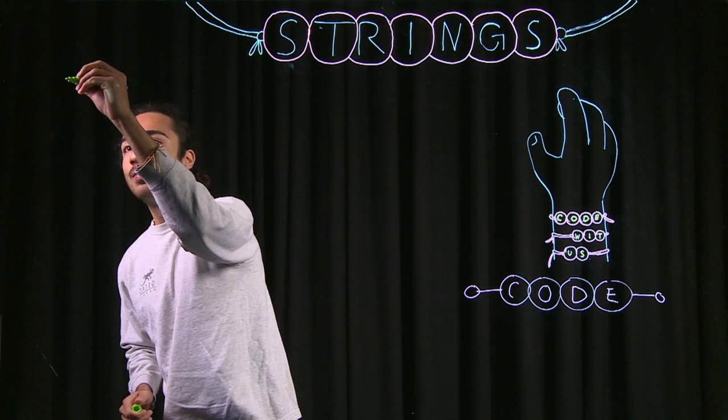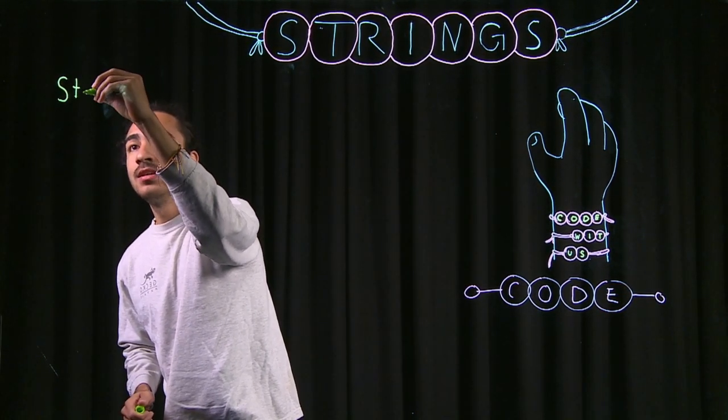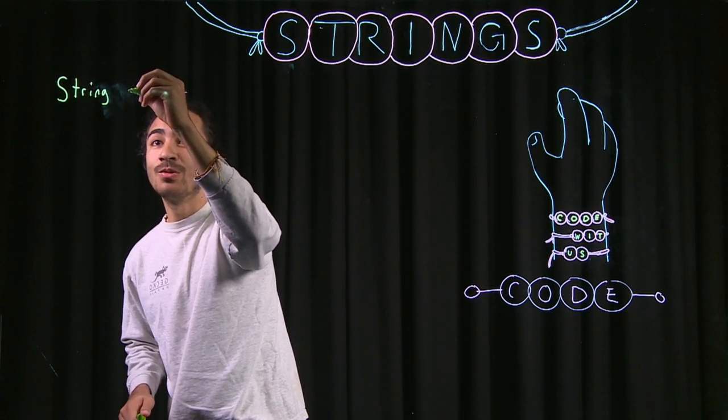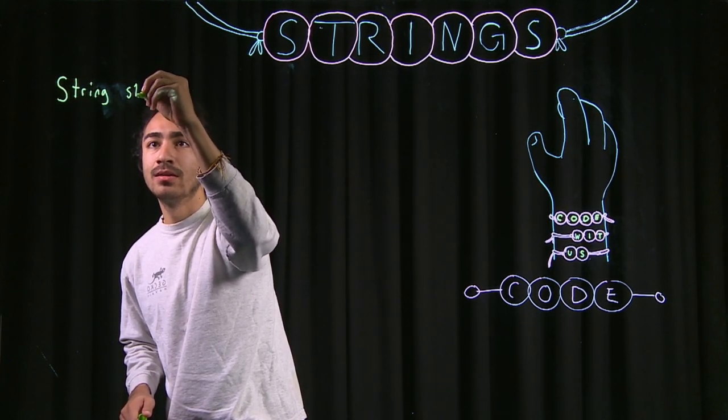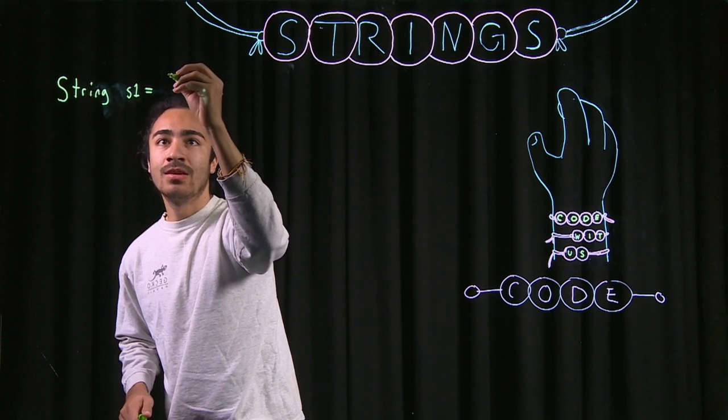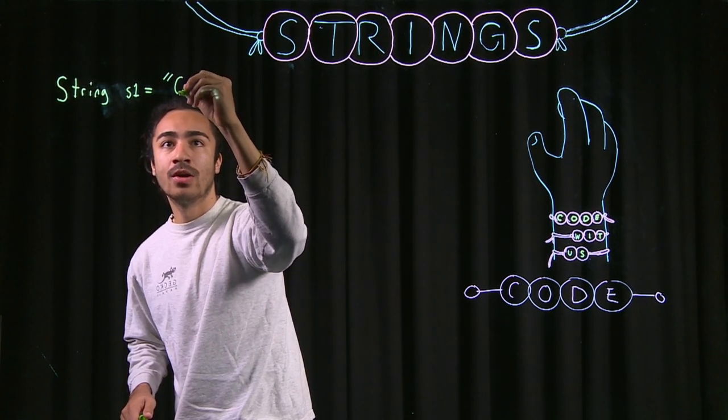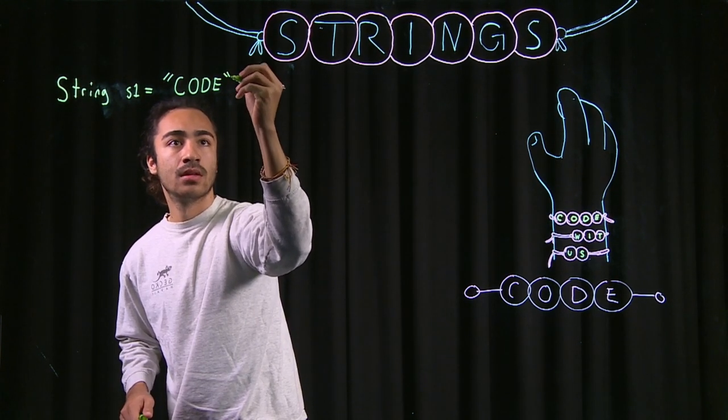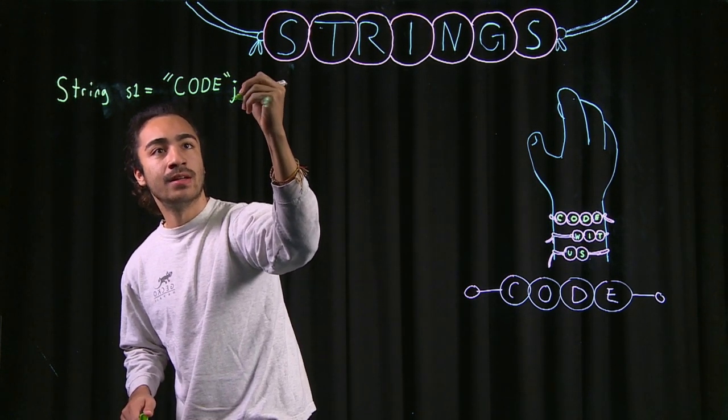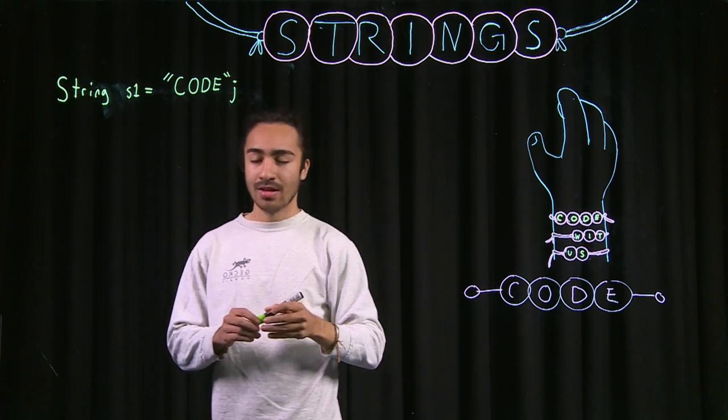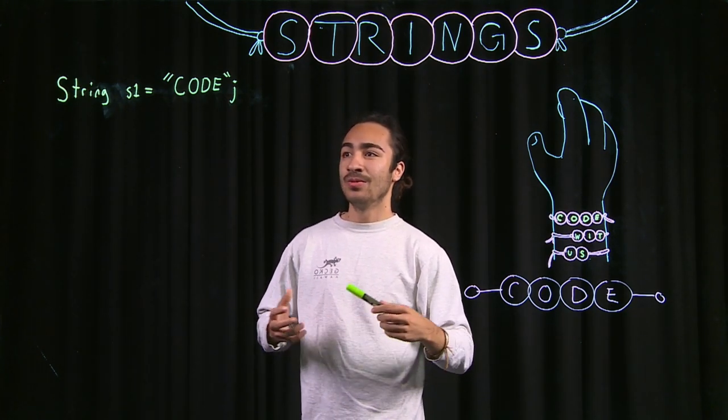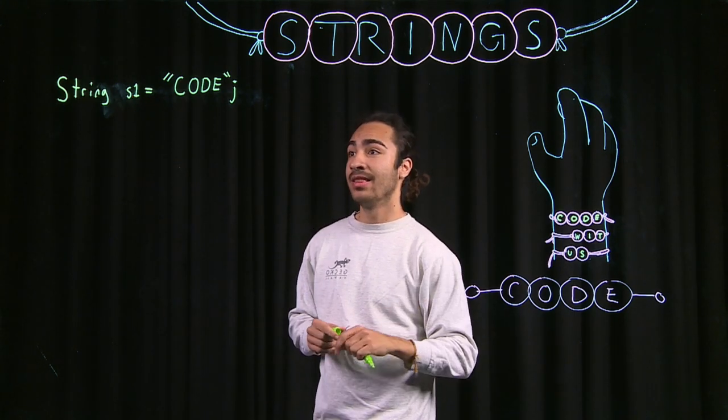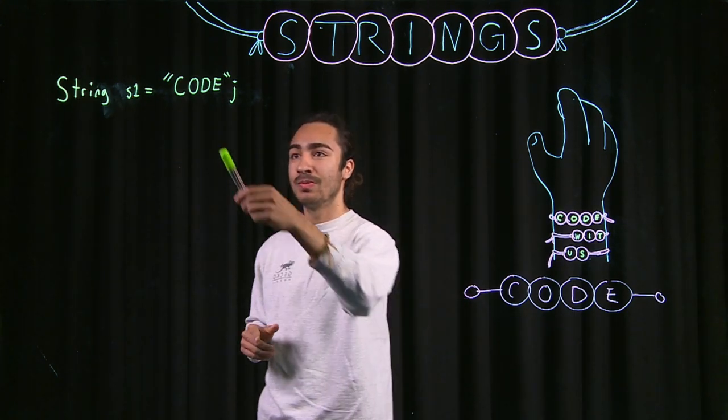And in Java, the way you'll write that would be S-T-R-I-N-G. And then whatever the name of your string you want to call, I'm going to call it S-1. We make it equal to our actual word, so it would be code in quotation marks. And this is telling Java to connect these characters into a string. Name it S-1 and wherever we have S-1 would just be our string.